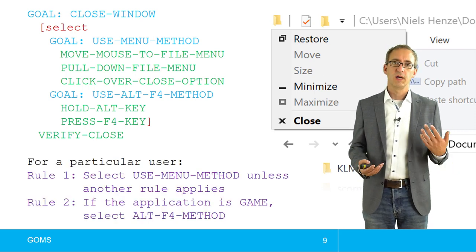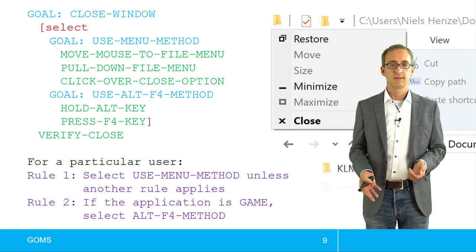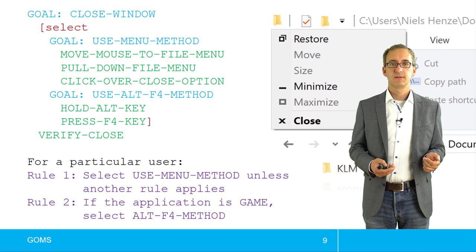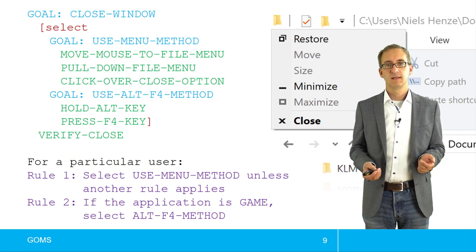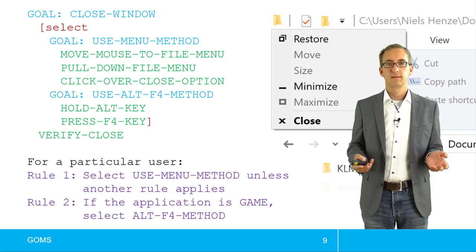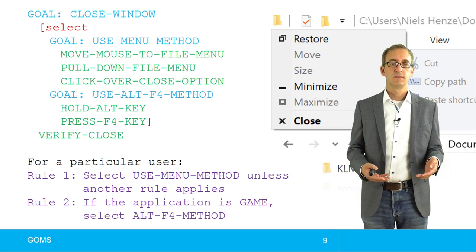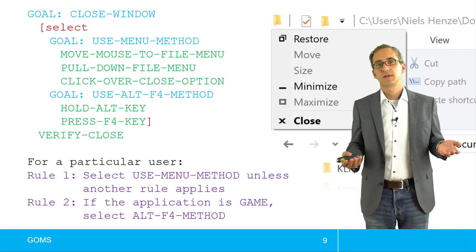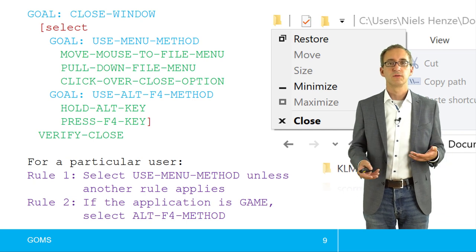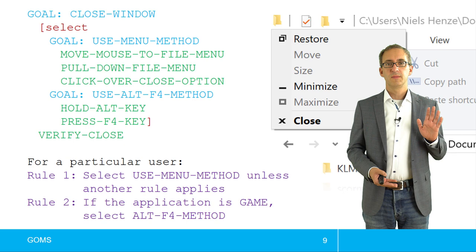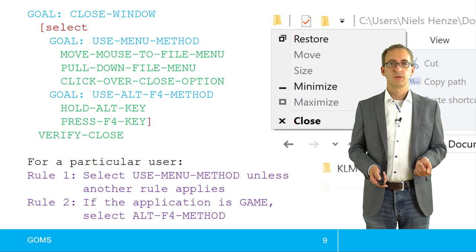And then I need selection rules. Why do I choose one over the other? And potential rules could be select the use menu method unless another rule applies. And then another rule could be if the application is game, select the Alt F4 method. Because games typically look a bit different and they don't have such menus.